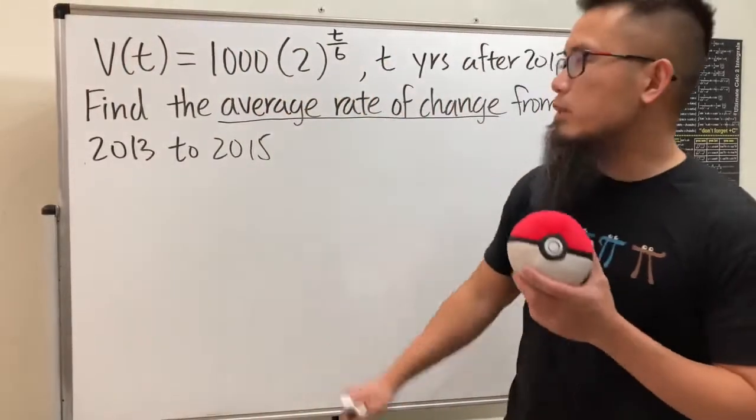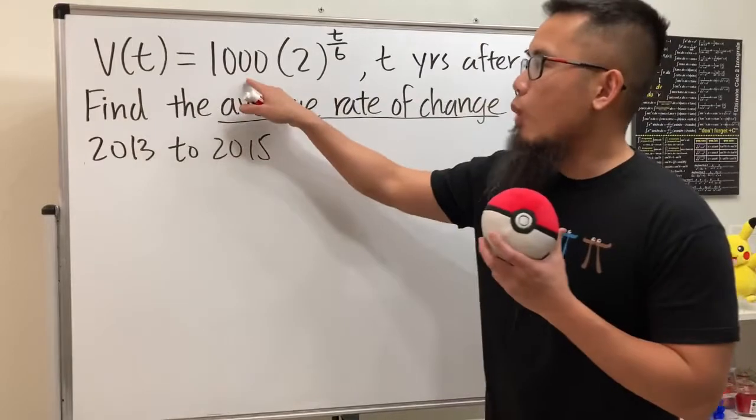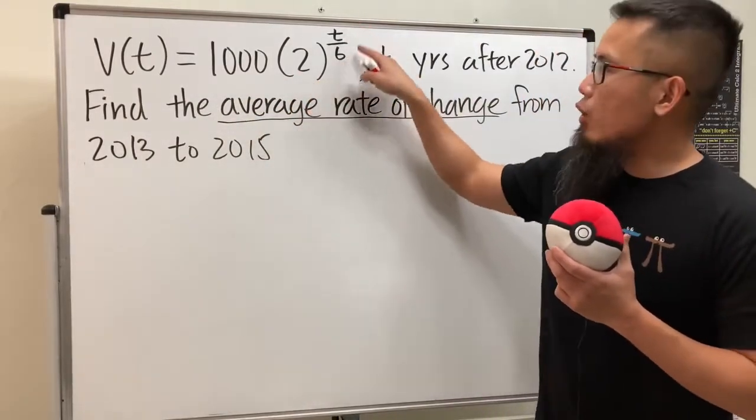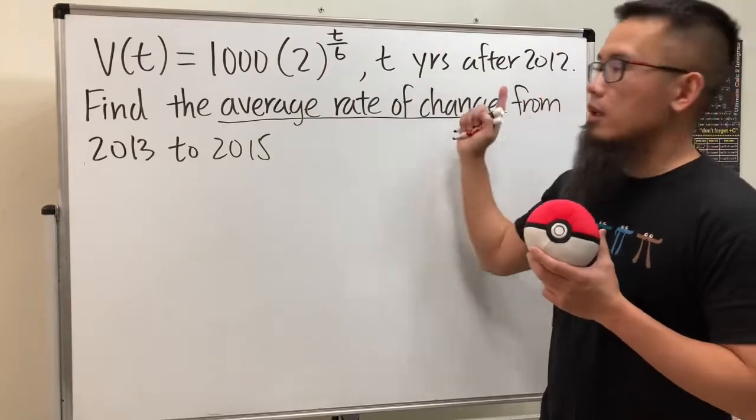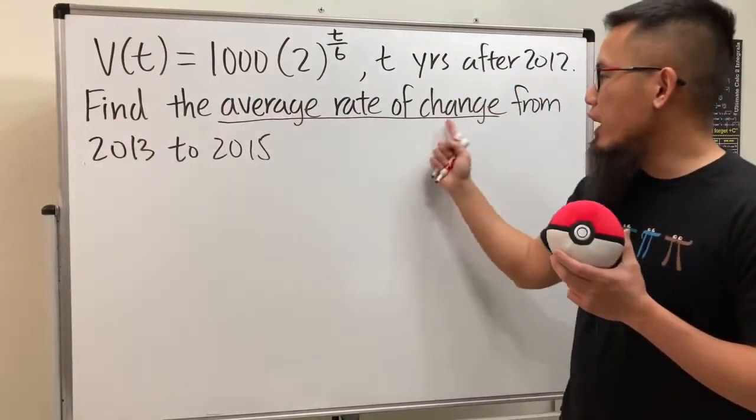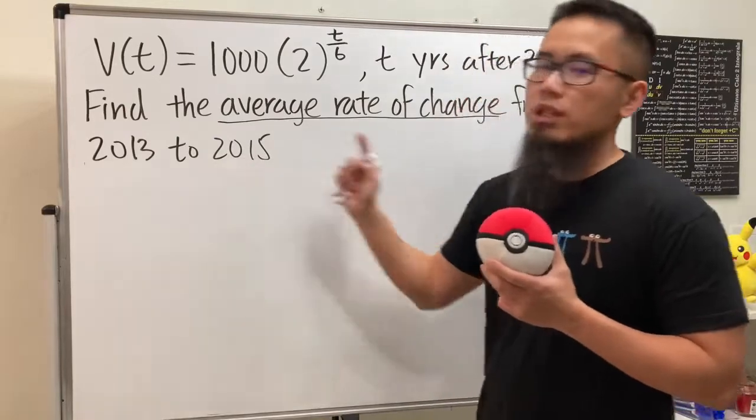Here we are given the value of investment, which is V(t) = 1000 times 2 to the t over 6 power, and t is the number of years after 2012. Here we have to find out the average rate of change from 2013 to 2015.